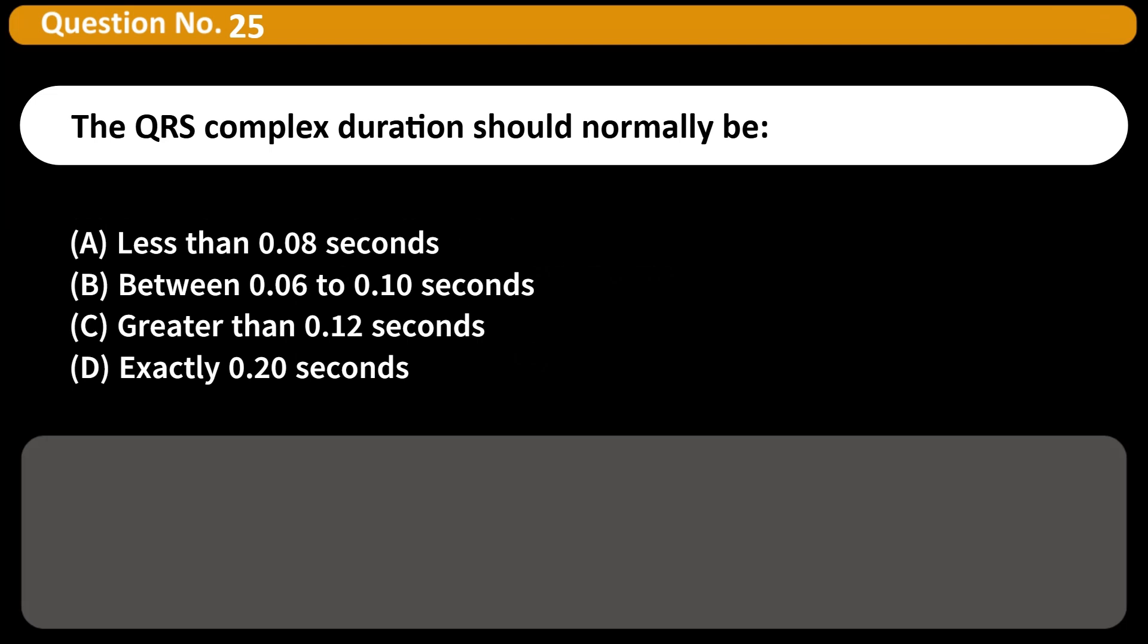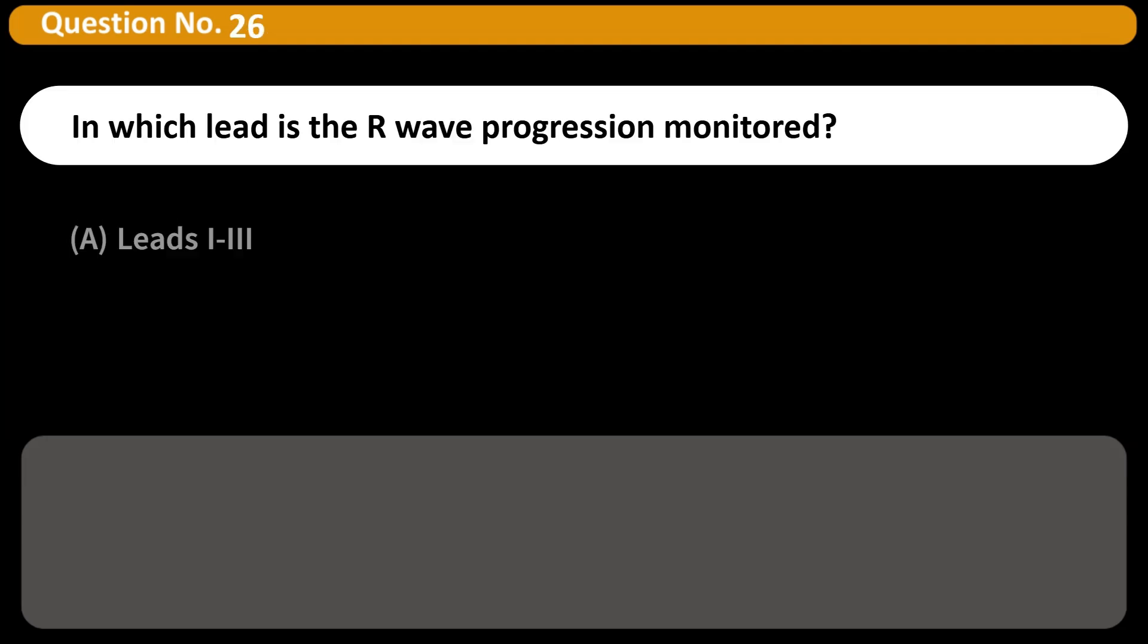The QRS complex duration should normally be A. Less than 0.08 seconds B. Between 0.06 to 0.10 seconds C. Greater than 0.12 seconds D. Exactly 0.20 seconds Answer B. A normal QRS complex lasts between 0.06 and 0.10 seconds.